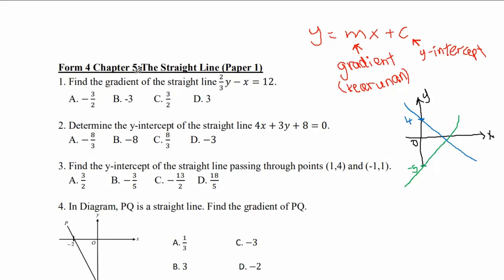For Chapter 5, the straight line. For this chapter, we have a very important equation that we have to remember. That is y equals to mx plus c. m means gradient — kecerunan. c here means y-intercept.